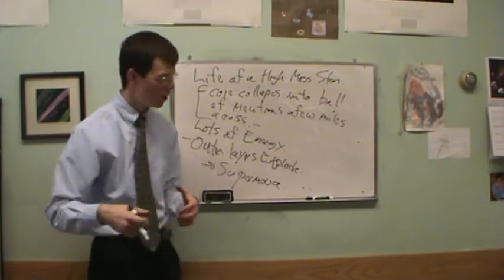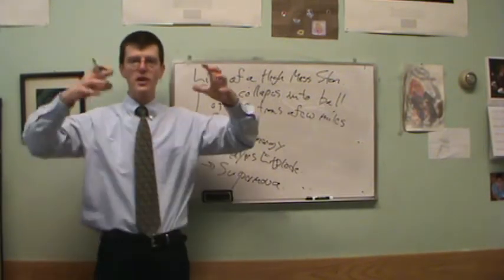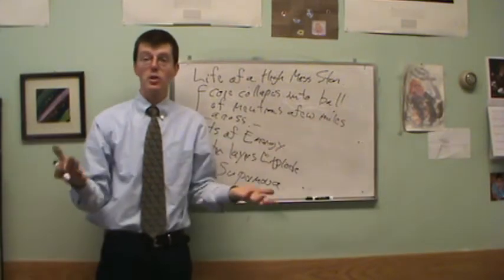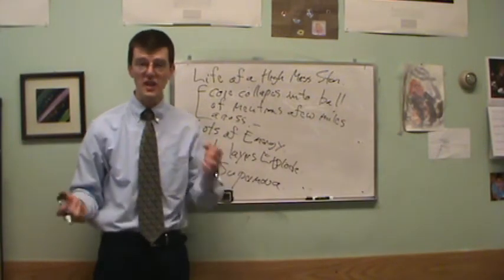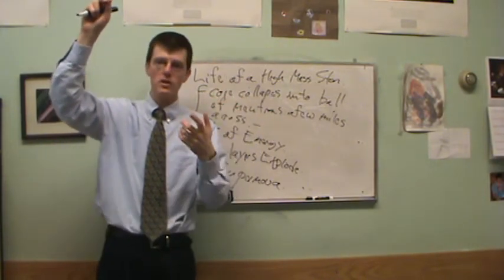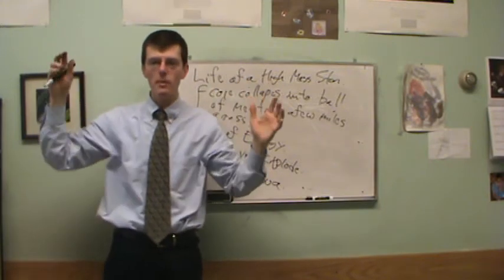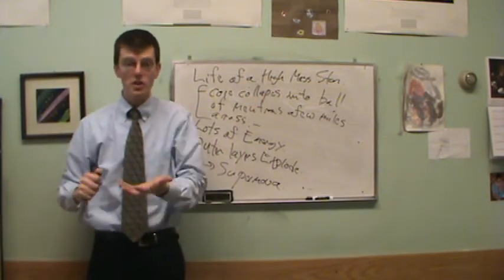A massive star supernova. So this is an amazing sort of thing where suddenly the outer layers of the star explode. We have observed these. The supernovae have been observed since ancient times. It's where suddenly all of a sudden a star will appear in the sky. Well, it was a star before. It was just very faint.